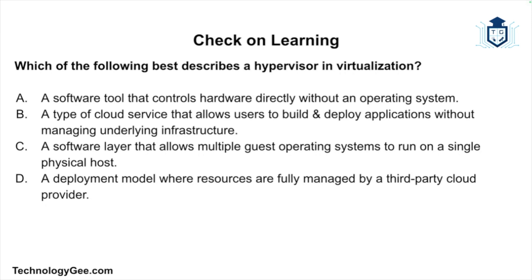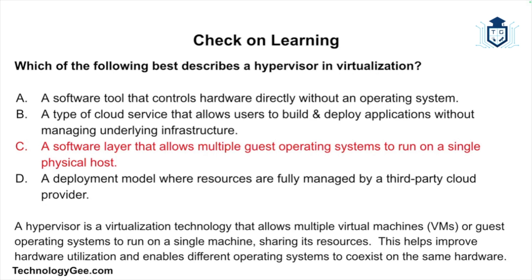Check on learning question one: Which of the following best describes a hypervisor in virtualization? The correct answer is C — a software layer that allows multiple guest operating systems to run on a single physical host. A hypervisor is a virtualization technology that allows multiple VMs or guest operating systems to run on a single machine sharing its resources, improving hardware utilization and enabling different operating systems to coexist on the same hardware.